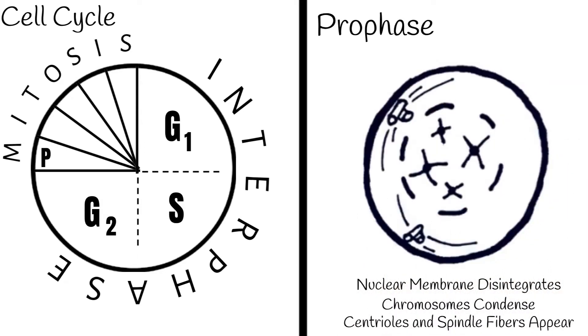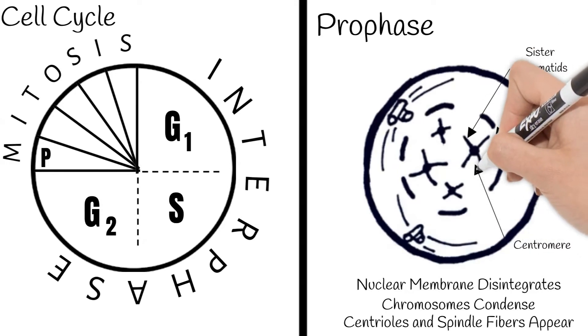That copy of each chromatid is next to the original, and we call them sister chromatids. They have a centromere holding them together, how we normally picture a chromosome.